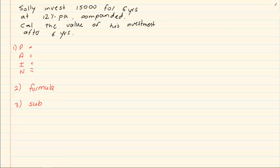If you are looking at this question, our P is 15,000 rand, our N is 6 years, and our I is 12%. But what is interesting is the word compounded.